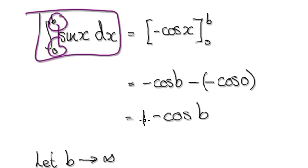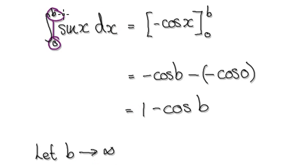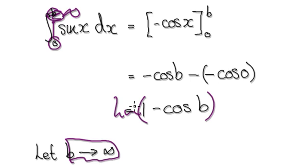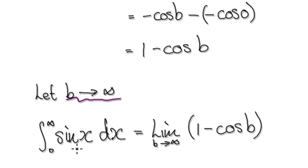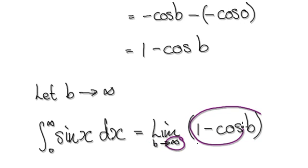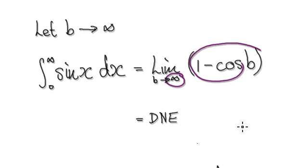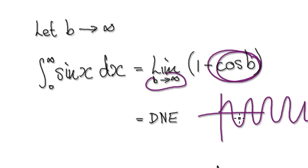Integrate this from 0 to b, it will then give you this. Now, let b head towards infinity — then you're really saying you're integrating from 0 to infinity. When you let b tend towards infinity, you're really taking the limit as b heads towards infinity. That means you're really taking the limit as b tends to infinity of this thing here. Now, as b tends to infinity, the limit here does not exist, because cos of b, as b tends to infinity, cos is just going to oscillate back and forth like this.